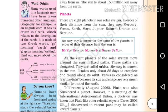Planets: there are eight planets in our solar system. In order of their distance from the sun, they are Mercury, Venus, Earth, Mars, Jupiter, Saturn, Uranus, and Neptune.